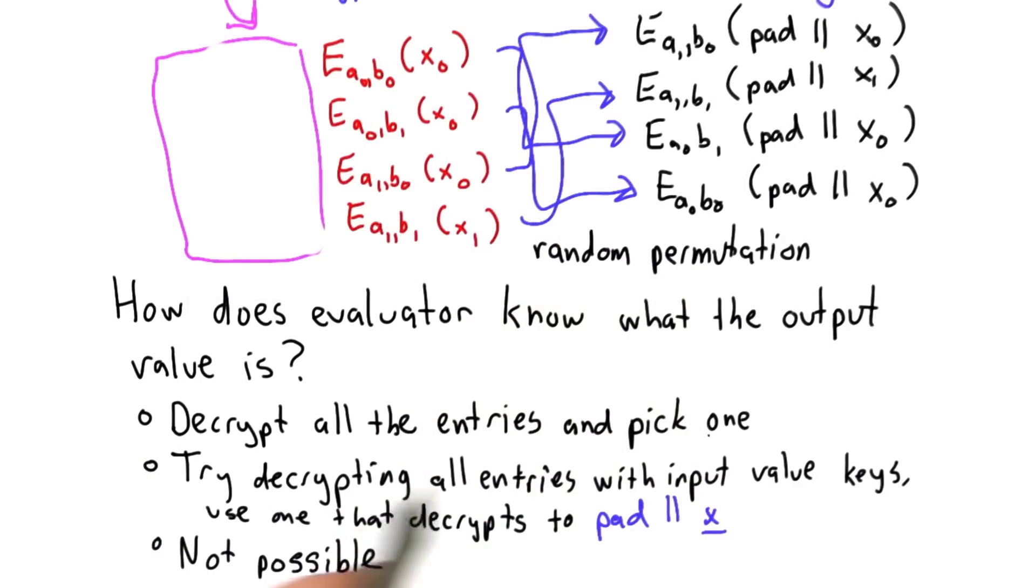The evaluator could try decrypting all the entries and pick the one that seems correct. The evaluator could try decrypting all the entries using input value keys known to the evaluator and use the one that decrypts to something of the form pad concatenated with x, and then use this value as the output.